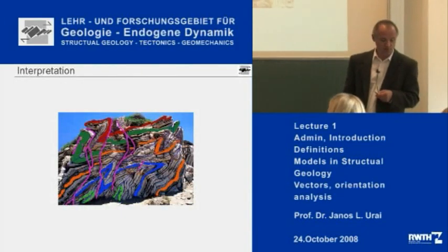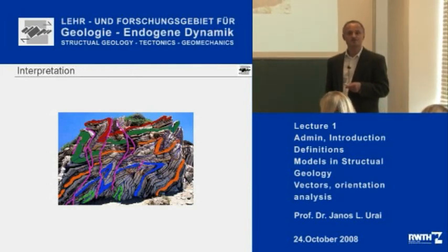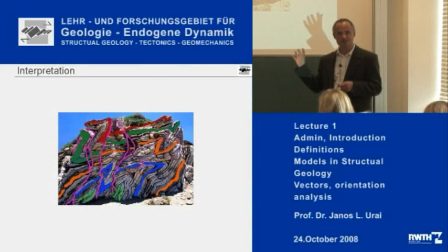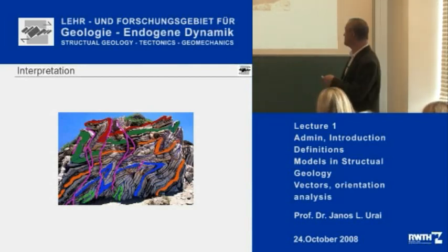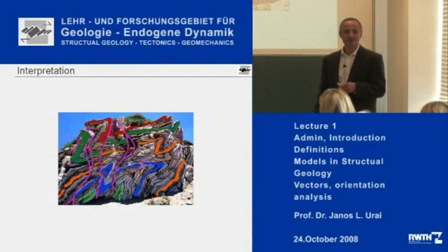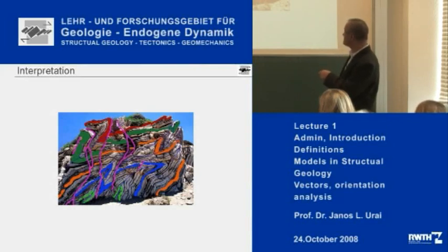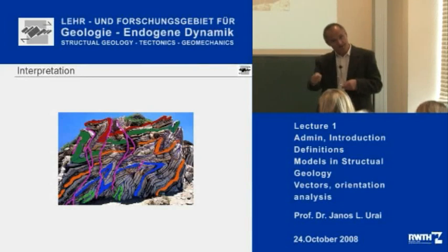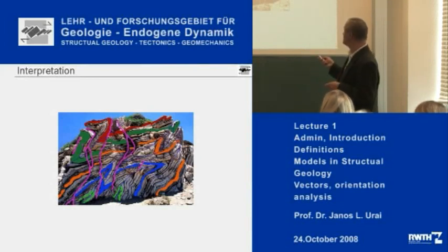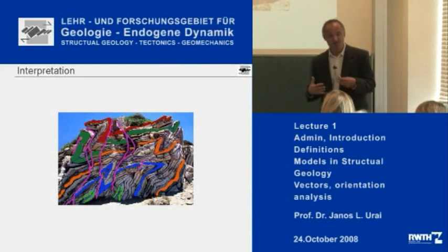This is a very simple geometric model — there is no kinematics here, it is just a geometric model. It is from a beautiful postcard from Crete, showing layered rock which is folded and broken. The different colors show you different layers, carefully marked — the orange one is a different layer, and then there is the green one, and so forth.